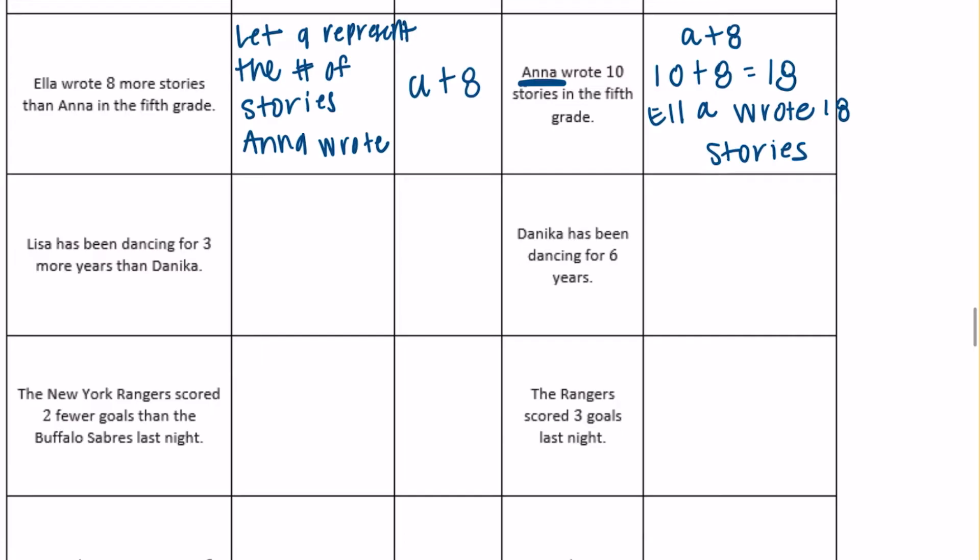Lisa has been dancing for three more years than Danica. They gave us Danica, so I'm going to let D represent the number of years Danica has been dancing.